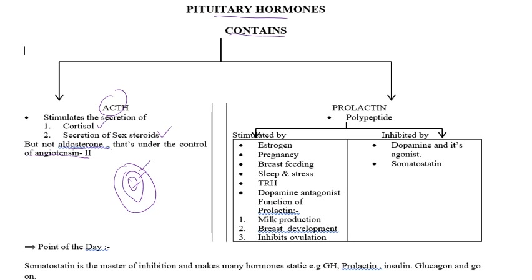Zona glomerulosa releases aldosterone, and that zona glomerulosa is under the effect of angiotensin 2. Zona reticularis and zona fasciculata release cortisol and sex steroids, and those zones are mainly under the effect of ACTH and CRH.